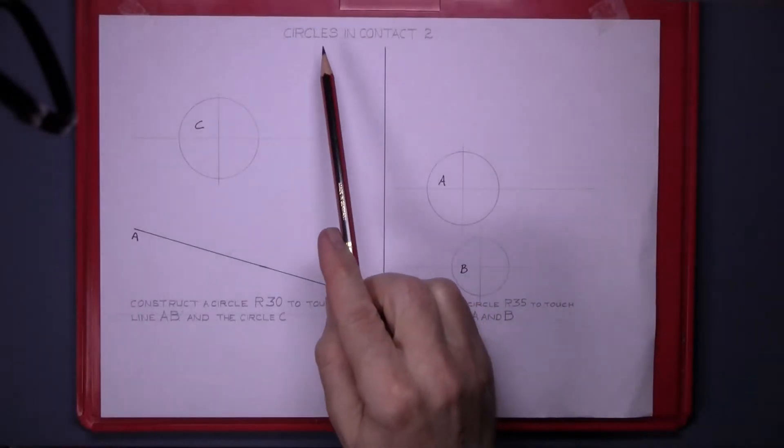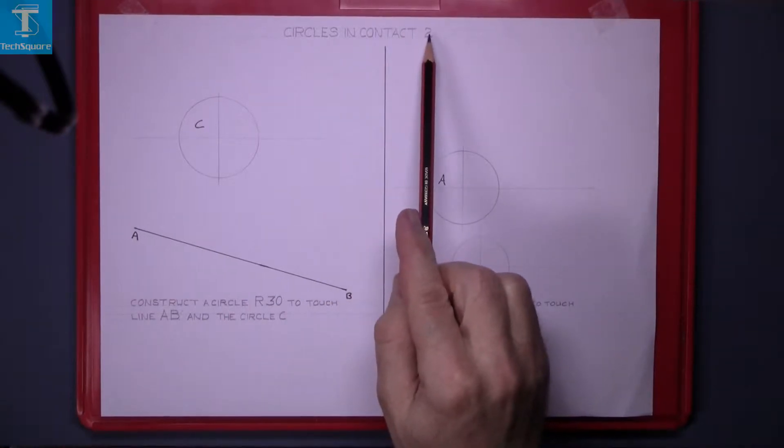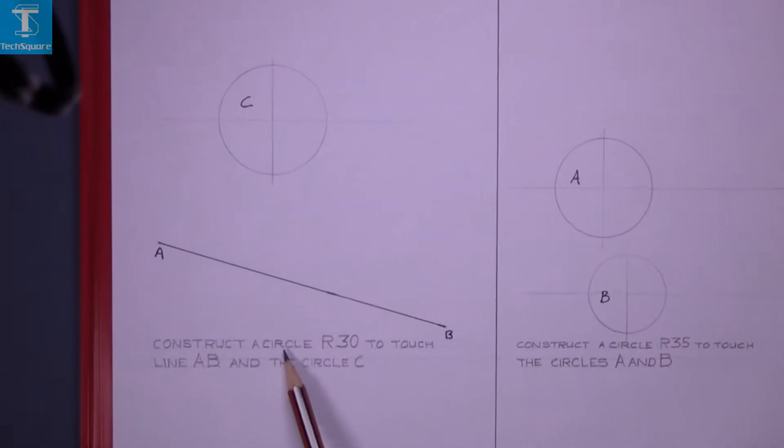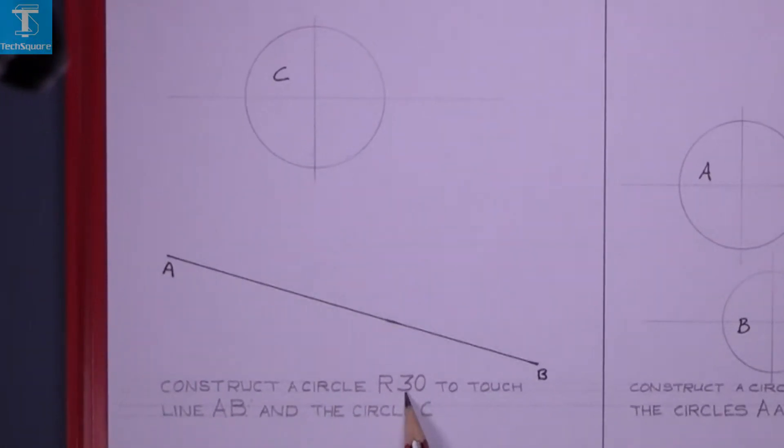This next exercise is circles in contact 2. Construct a circle 30mm radius to touch line AB and circle C. So this is line AB and circle C. The circle is going to be in this position here.